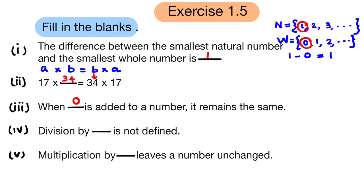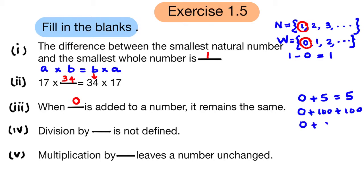Third question: When 0 is added to a number it remains the same. For example, 0 plus 5 is 5, 0 plus 100 is 100, and 0 plus a is a.